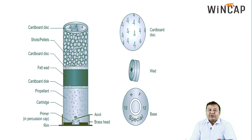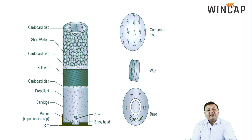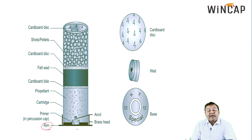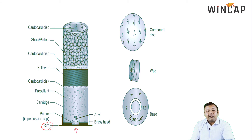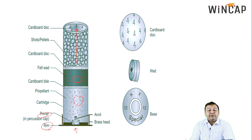A shotgun cartridge is structurally very different from a rifled gun cartridge and has various parts. From the base upwards, the lowermost part is known as the rim. This rim is where the hammer from the firearm strikes. Once it strikes here, it ignites the primer, which is the second important part. The primer then causes the gunpowder to flare up, which causes the cardboard disc and wad to push the pellets outside.